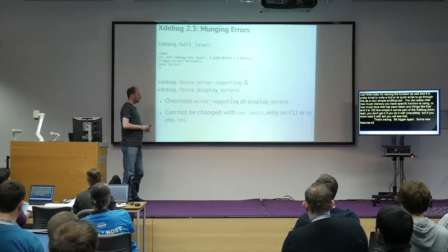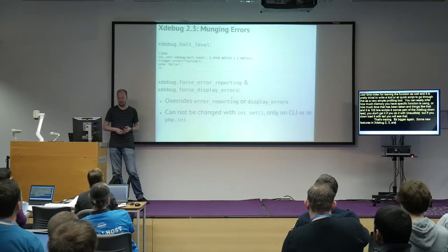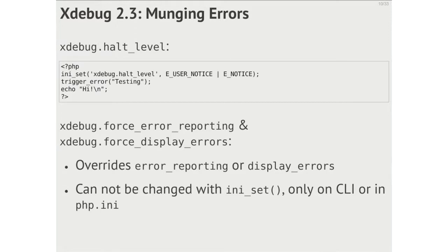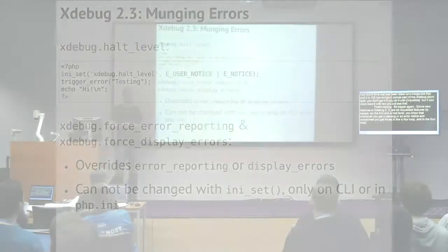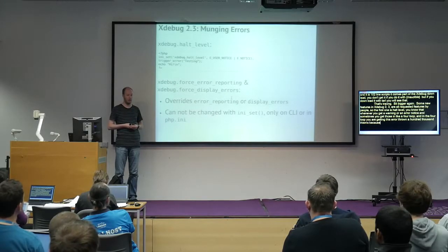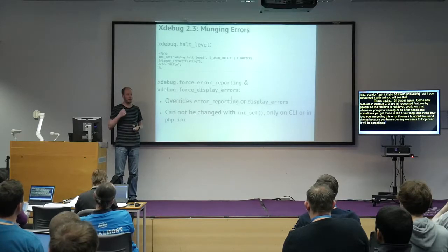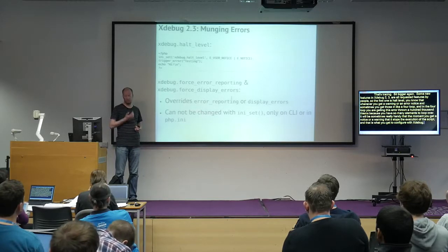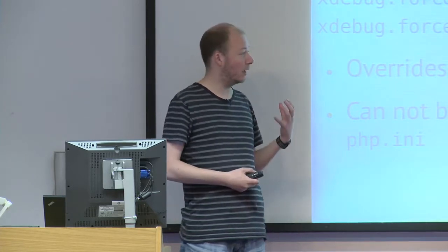Some new features in Xdebug 2.3, all requested features by users. The first is halt_level. You know how sometimes you get a warning or notice in a for loop and the error gets thrown a hundred thousand times because you have so many elements to loop over? It can be really handy that the moment you get a notice or a warning, execution stops. That is what you configure with xdebug.halt_level — you give it all the notice and warning types you want Xdebug to halt your script on.